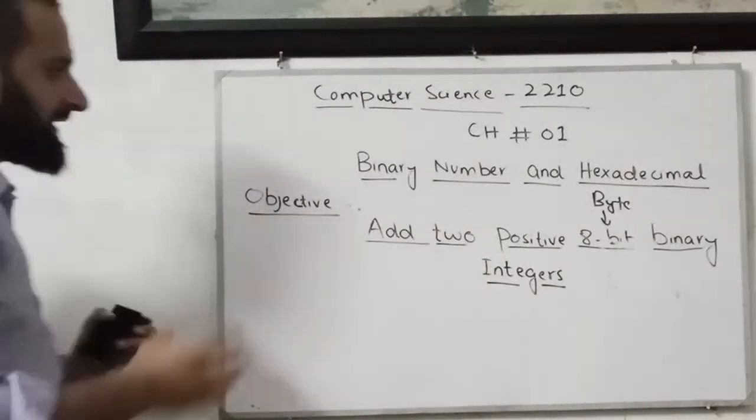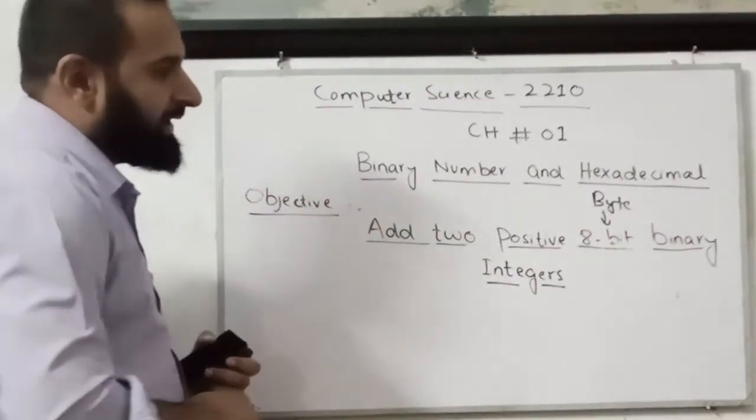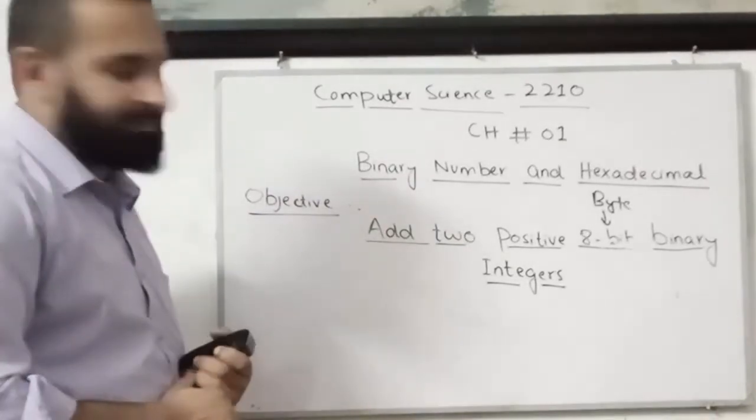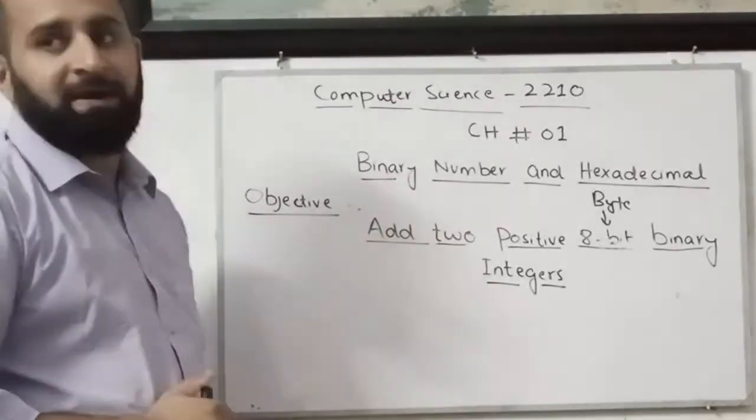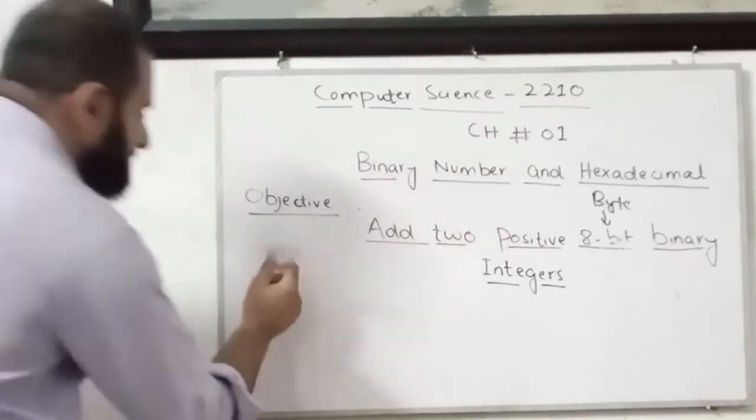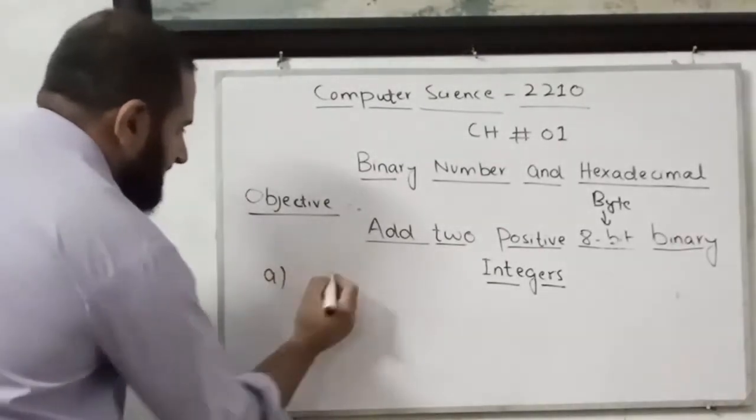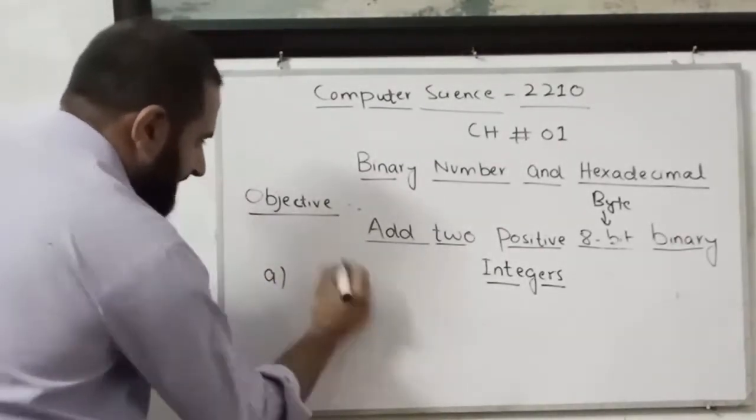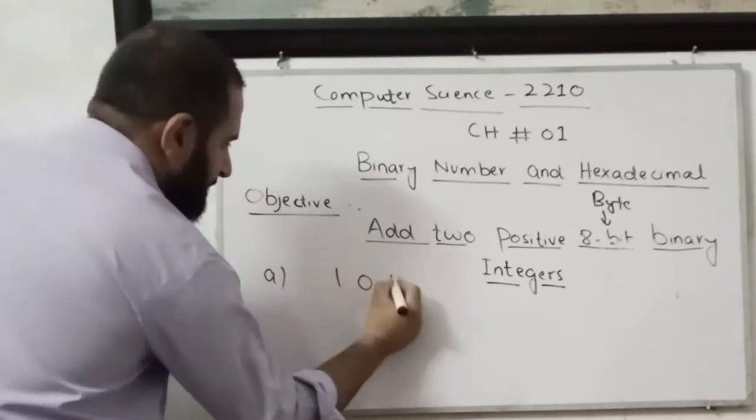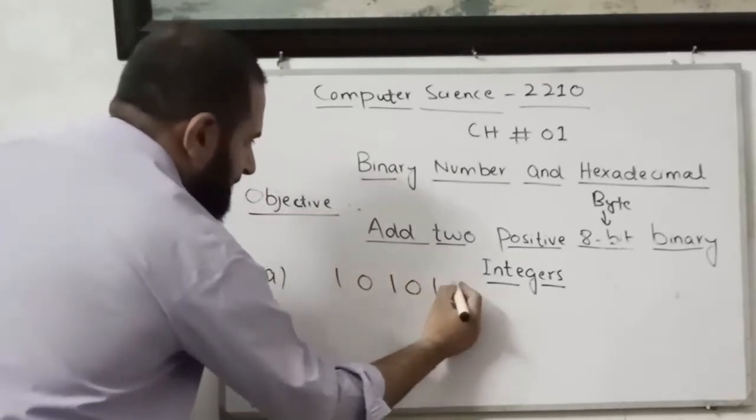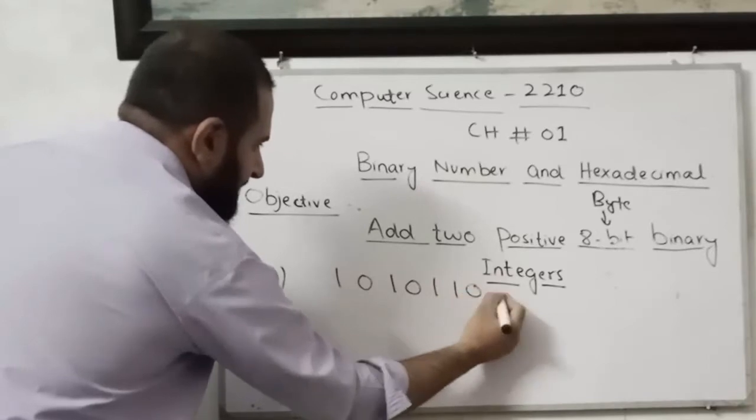So let's take a start. I am going to pick one 8-bit binary number. We need to add positive 8-bit binary numbers. First of all I will write over here a question. Let me write here: 1, 0, 1, 0, 1, 1, 0, 1.